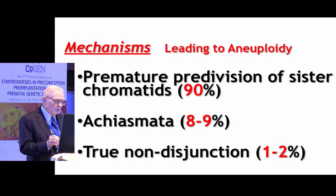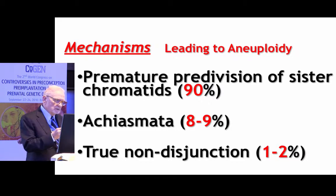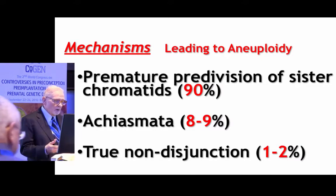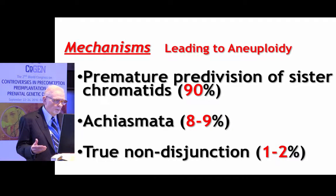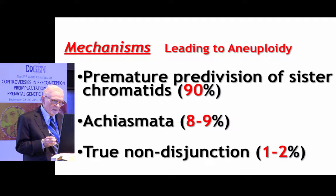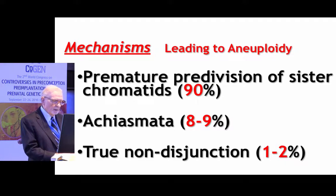In fact, true non-disjunction represents a very small part of the mechanisms leading to aneuploidy — it may occur in only about one or two percent of cases. As Alan Handyside has referred to on a number of occasions at this conference, premature pre-division of sister chromatids forms the major mechanism leading to aneuploidy. Achiasmate non-disjunction occurs in about eight or nine percent.